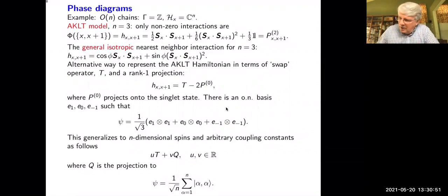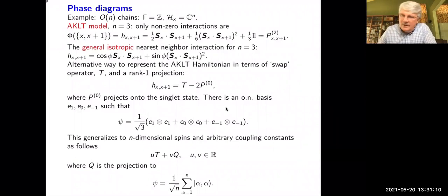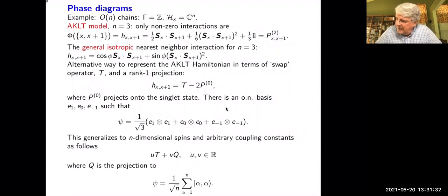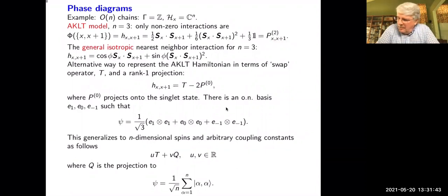Let's look at spin chains — this is a class that includes the AKLT model. It's one-dimensional. The AKLT model has an O(3) symmetry and a nearest-neighbor interaction, so the only nonzero interaction terms correspond to nearest-neighbor pairs in the chain. The terms are translated copies of a fixed particular operator on two spin-1 sites. The Hilbert space is three-dimensional at each site. This is a projection operator onto the subspace of spin-2 states in the tensor product of two spin-1 spaces. That is the AKLT model.